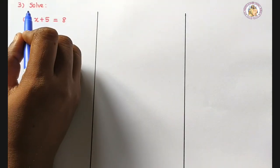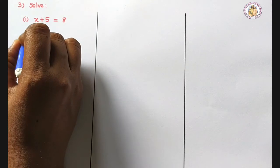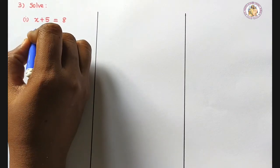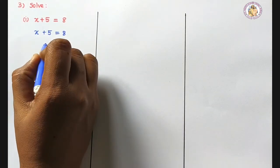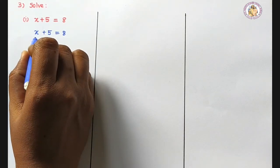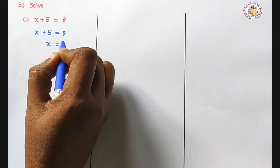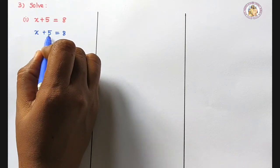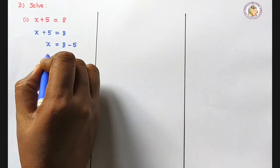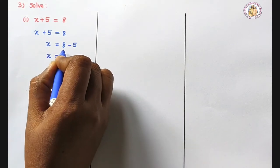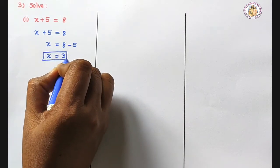Third question: solve x plus 5 equals 8. We don't know x; we want to find out the value of x. Bring the 5 to the other side — it becomes minus 5. So x equals 8 minus 5, which is 3. The value of x equals 3.